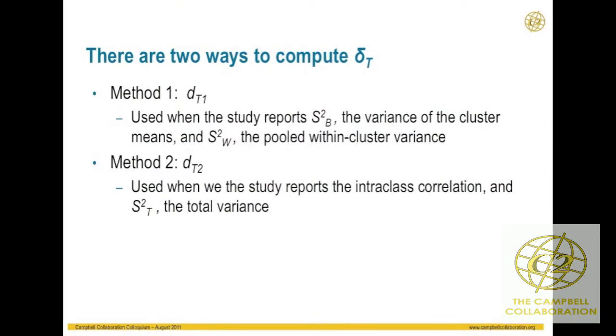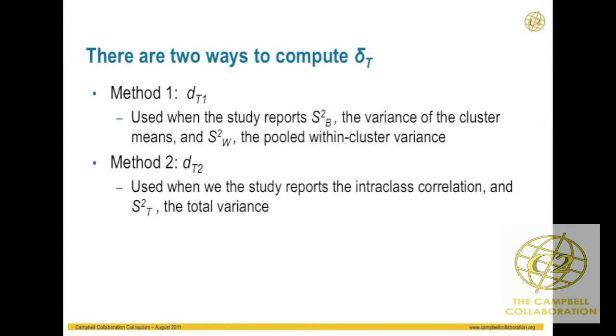There are two ways to calculate delta-T, depending on what kind of information is given in a study — because every study gives you different information. If we get both the sampling variance for the between-group means and the within-cluster variance, we use one approach. If we only get the total variance at the level of the individual observations and the intraclass correlation, we use a second method.